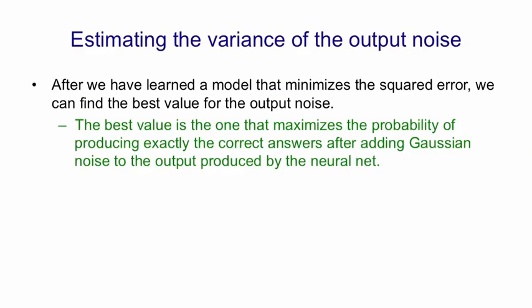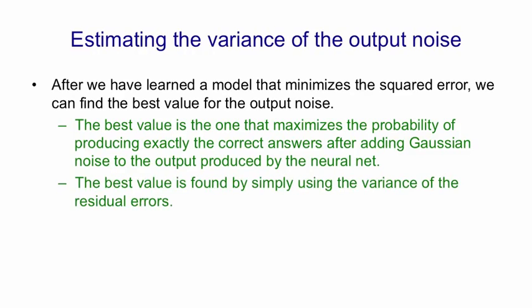After we've learned a model to minimize squared error, we can find the best value for the output variance. The best value is found by simply using the variance of the residual errors.